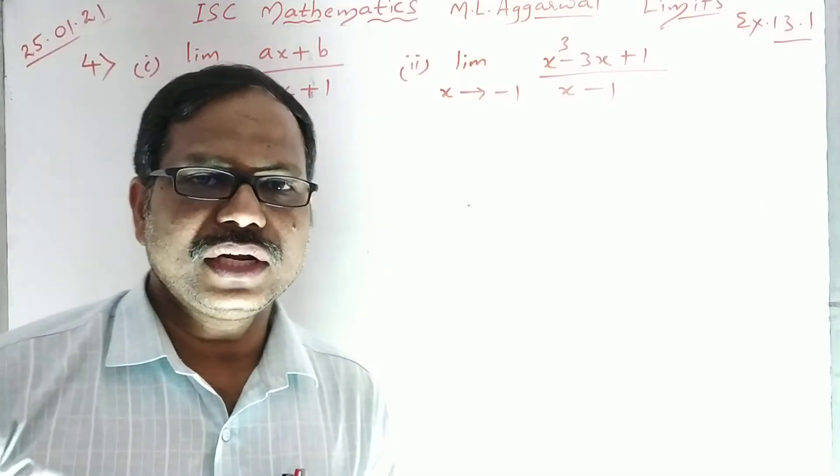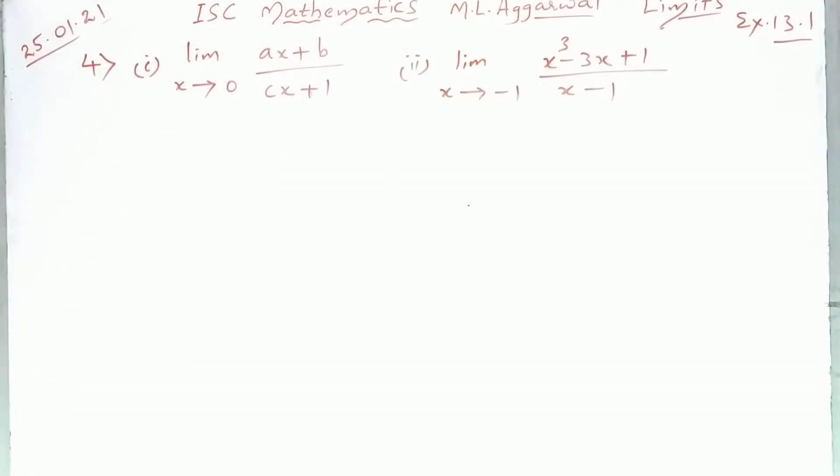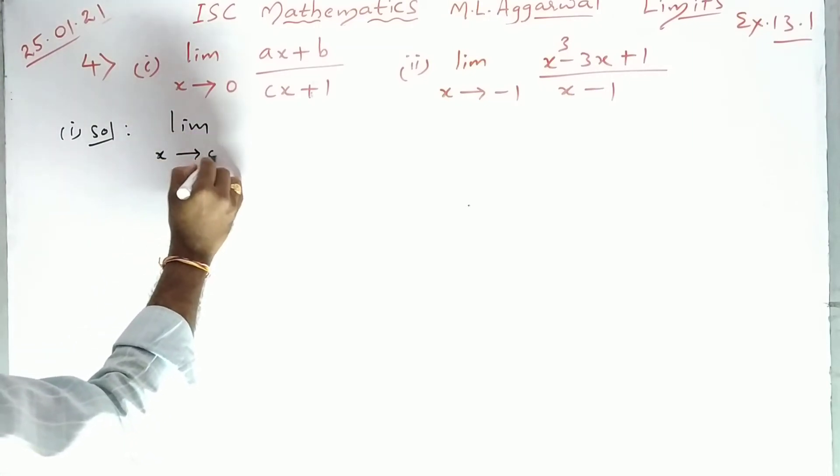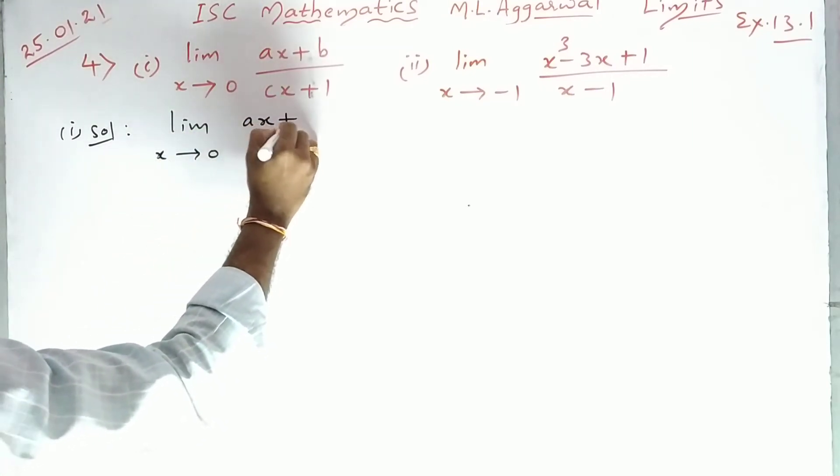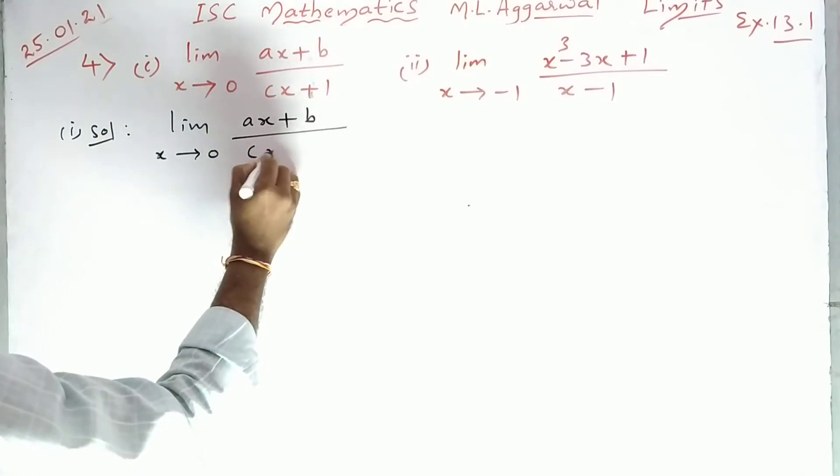Hi students, good evening everybody. In exercise 13.1, look at this question. Actually this problem is third question, first problem. So in the previous problem I have done that, so I am doing the next problem. Just make the correction: limit x tends to 0, (ax+b)/(cx+1).